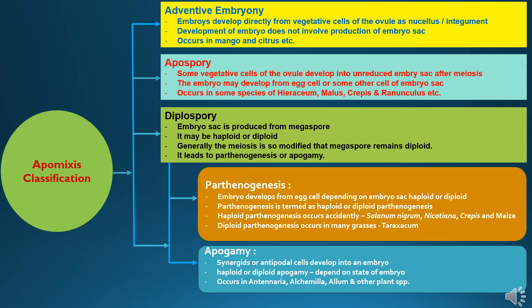The third type is diplospory, where the embryo sac is produced from megaspores and it may be haploid or diploid. Generally, meiosis is so modified that the megaspore remains diploid, and it leads to parthenogenesis or apogamy. Diplospory has two conditions.